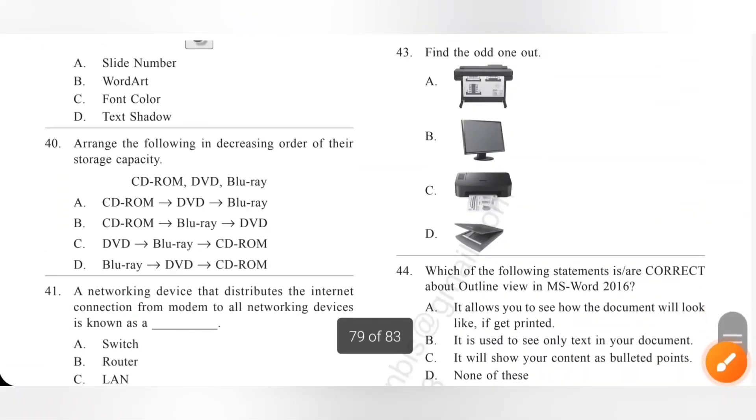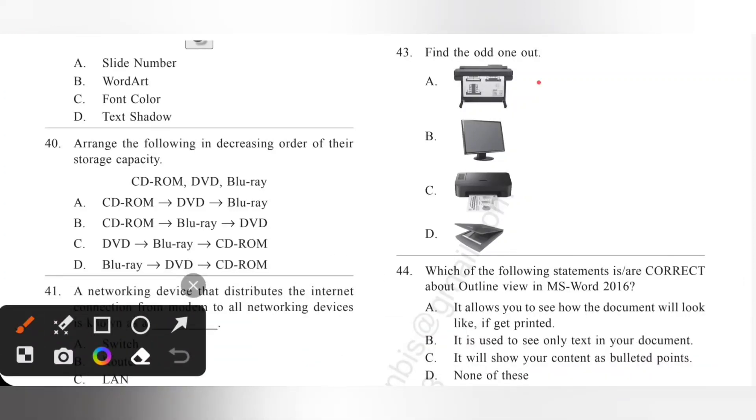Question 43: Find the odd one out. So, please check the option. So, option A is a printer and then A, B and then C, all are output devices. But, option D is a scanner. It is an input device. So, option D is the correct answer.